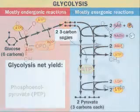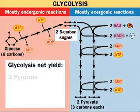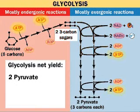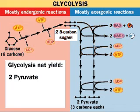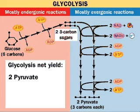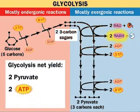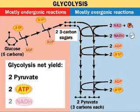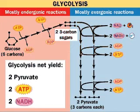These exergonic reactions produce 2 pyruvates and 4 ATPs, but 2 ATPs were used in the endergonic reactions that split the glucose in 2. So, in glycolysis, there is a net gain of 2 ATPs which are available for cellular processes. The 2 NADH molecules will be taken up by the electron transport chain, where they will make additional ATPs via oxidative phosphorylation.